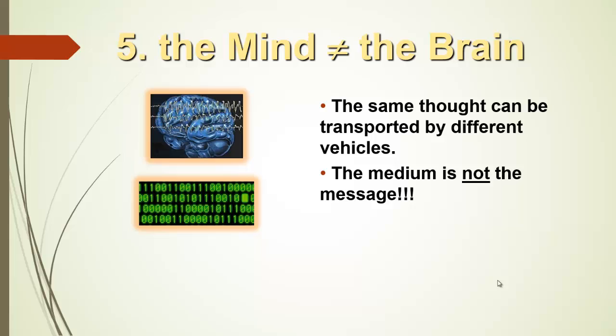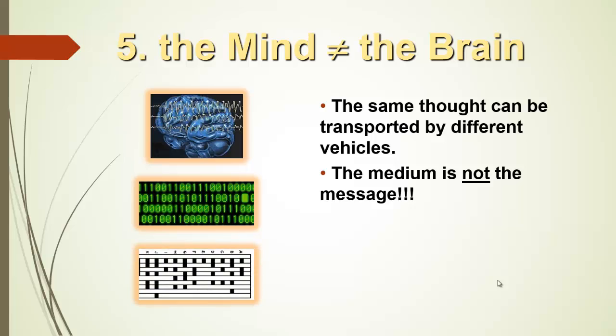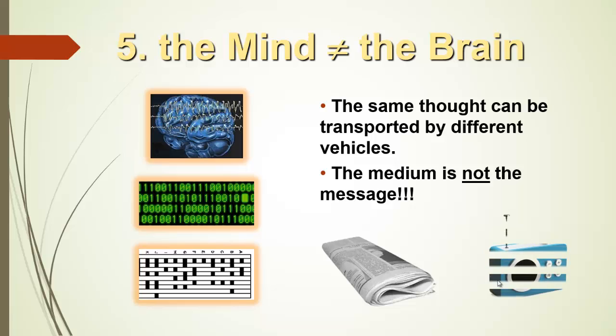A computer is a medium for thoughts. You can write your thoughts on a word processing machine. Morse code is a vehicle for thoughts, for a message. A newspaper is a medium for the message. A radio is a medium for the message. When the radio breaks down, that doesn't mean that the news breaks down.